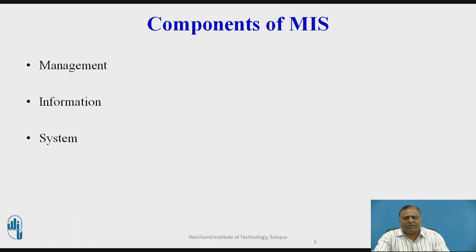System: A system can be described as a set of elements joined together for a common objective. A subsystem is a part of a larger system with which one is concerned. For our purpose, the organization is the system, and the parts — that means division, department, functions, unit, etc. — are the subsystems.